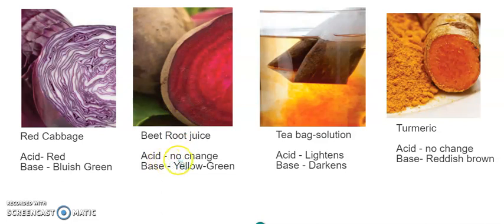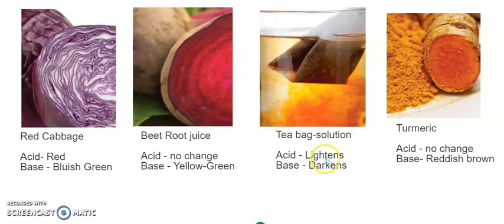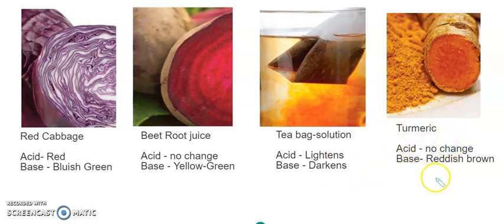If beetroot is added to an acid, there is no change in color. If mixed with a base, the color of the substance changes to yellow-cream. Tea bag solution, if mixed with acid, the color of the solution becomes lighter; when base is mixed in, it darkens. For turmeric with acid, no change — same color. For base, it changes to brownish-reddish brown.